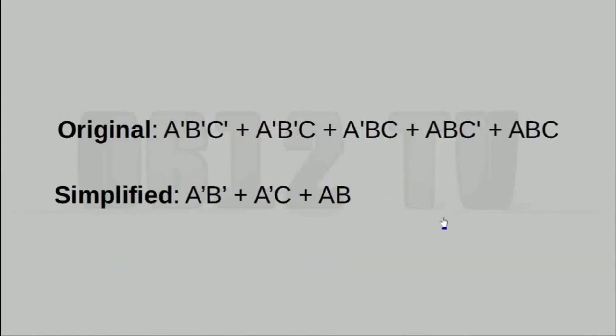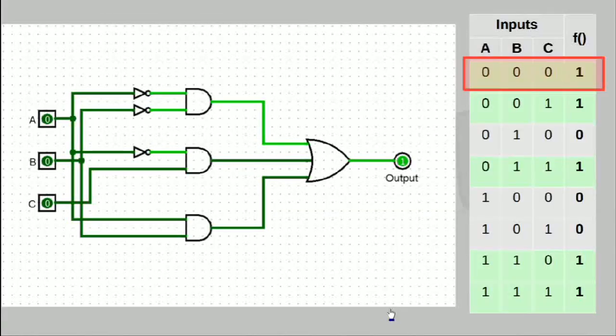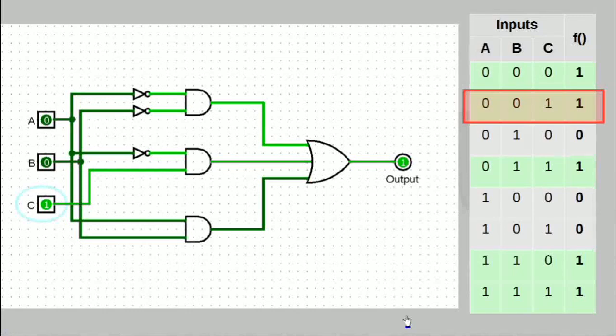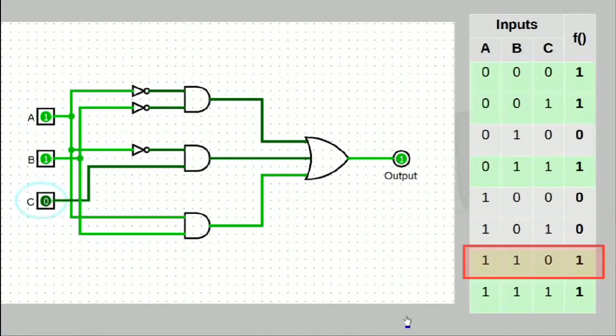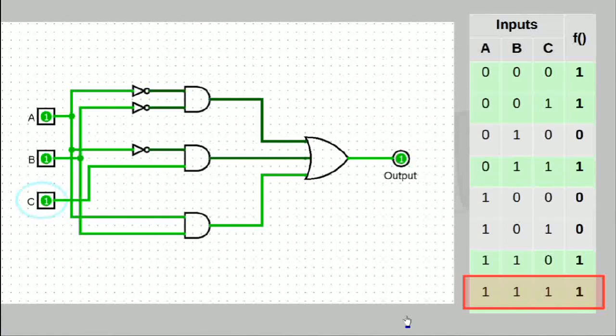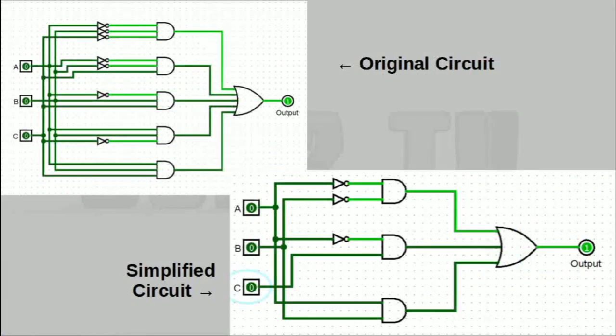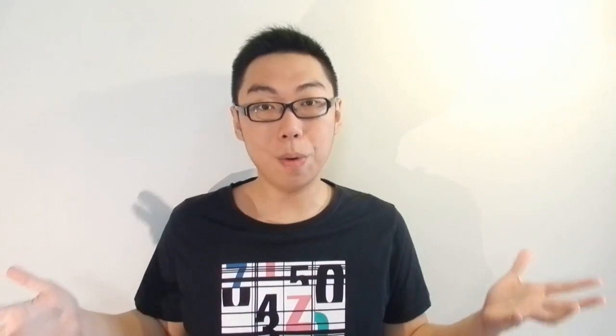As you can see, the simplification actually really removes a lot of entries from the original equation. Let's actually build this and take a look. As you can see, this circuit looks so much simpler. Running through all the inputs, it's behaving as we would expect. So that's the beauty of a Karnaugh map. As you can see, it really simplified things by a whole lot. And there you go, that's how Karnaugh maps work in a nutshell.